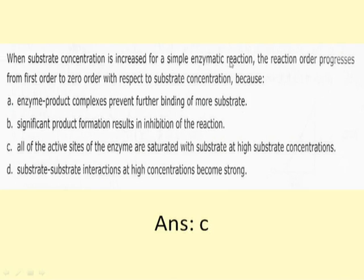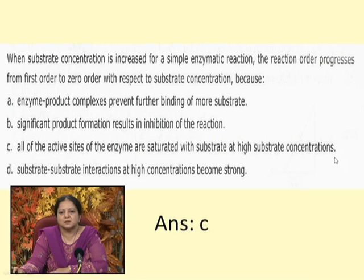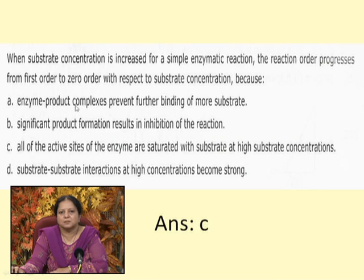When substrate concentration is increased for a simple enzymatic reaction, the reaction order progresses from first order to zero order with respect to substrate concentration. The options given are: enzyme-product complexes prevent further binding of more substrate; significant product formation inhibits the reaction; all active sites are saturated with substrate at high substrate concentrations; or substrate-substrate interactions become strong. The correct answer is C — all active sites are saturated with substrate at high substrate concentrations.